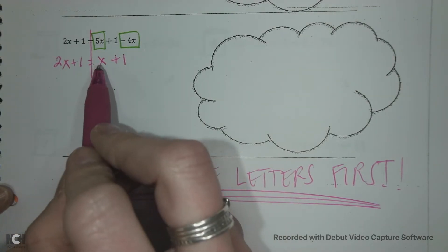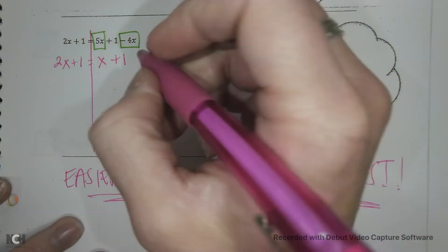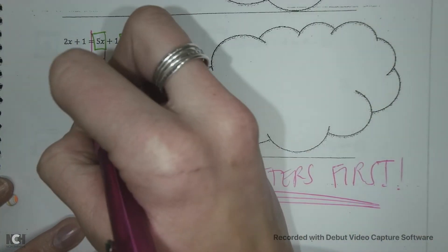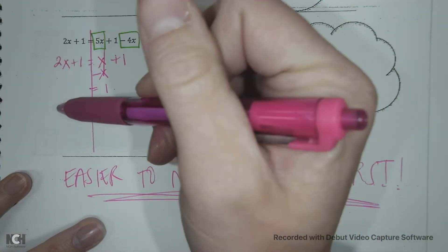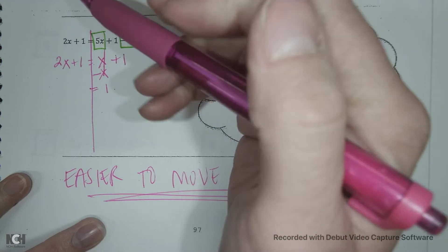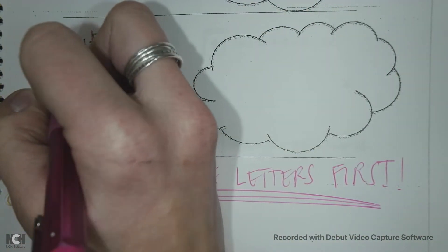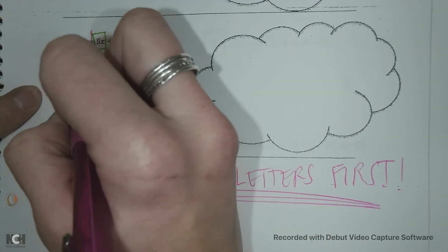So on this side, I have a positive x. I want to get rid of my positive x over here. So I'm going to take away x from that side of my equal sign, leaving just the 1. Well, if I take 1x away from this side of my equal sign, I also have to take 1x away from here. I need to take it away from its like term, so my 2x. So I'm going to take 1x away. 2 minus 1 is 1x and I still have my 1.